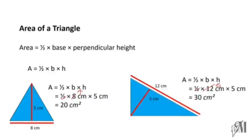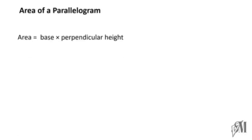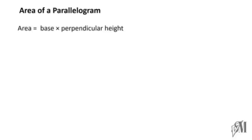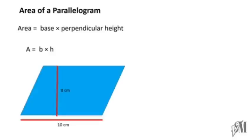Moving on to the next type of plane figures, that is area of a parallelogram. When you come to a parallelogram, its area is equal to the product of base into the perpendicular height. So it is simply A = b into h. If you take this parallelogram, the base is 10 centimeters and the perpendicular height from this base is 8 centimeters, so the area is 10 into 8, which gives you 80 square centimeters.